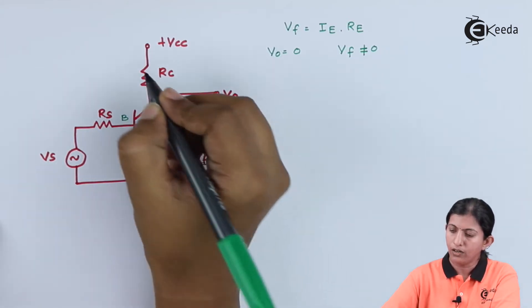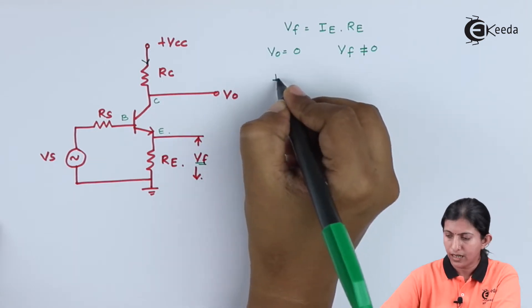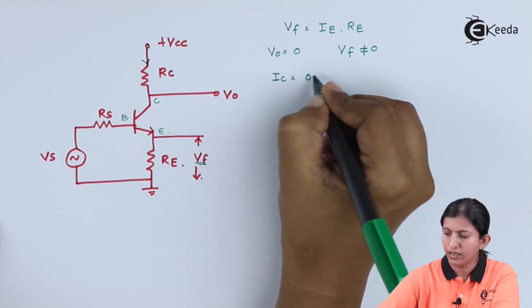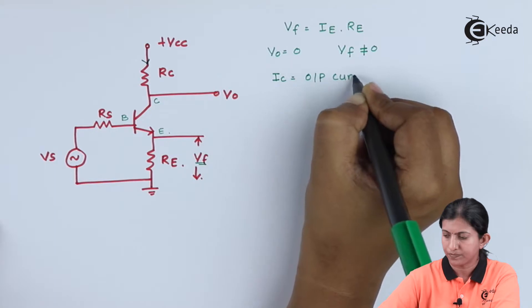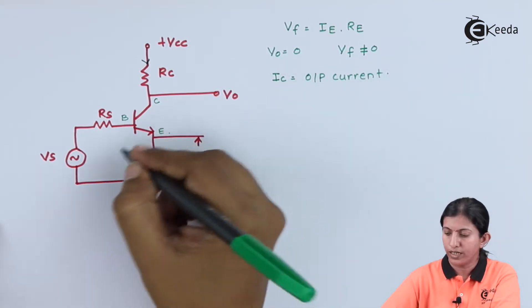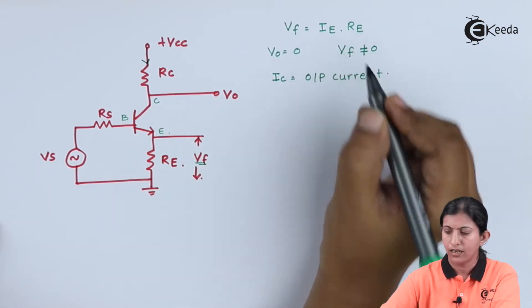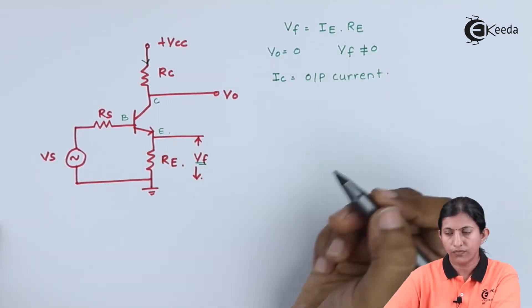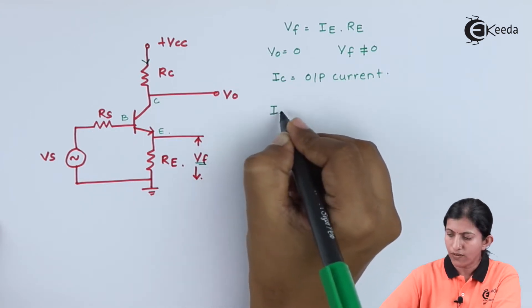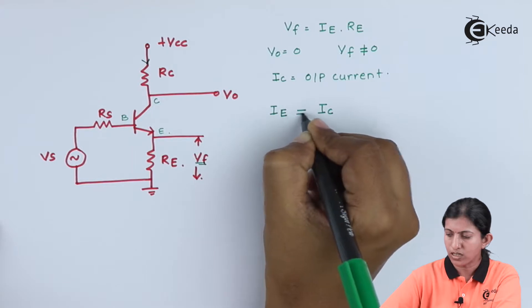Then, as we know the current flowing through the output circuit is Ic and Ic is nothing but the output current. And the voltage drop across the emitter is Ie*Re. In case of transistor, we know that the value of Ie and Ic are approximately same.